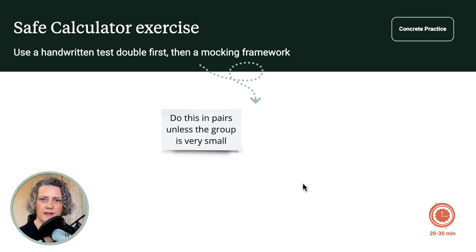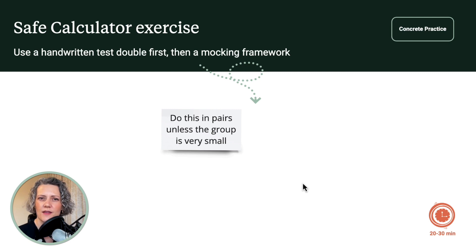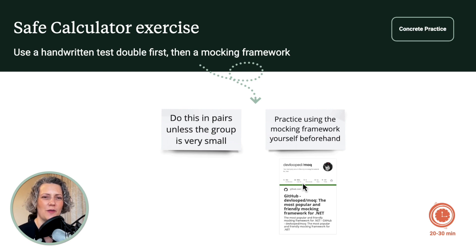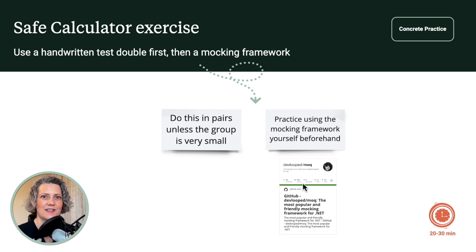The next part is the hands-on exercise. The code for SafeCalculator is available in several programming languages, so pick the one that suits you and set it up so you've got a project you can share — it's good to do this exercise in small groups or pairs. In the demo I show how to solve the problem with a hand-coded test double, but then I want you to also try doing it with a mocking framework. You'll need to practice that beforehand, or at least look up the documentation. For C#, Moq seems to be quite a popular framework. When you facilitate the exercise, you can help if they get stuck or need prompting for the documentation.